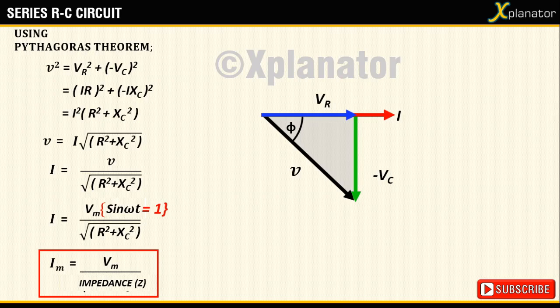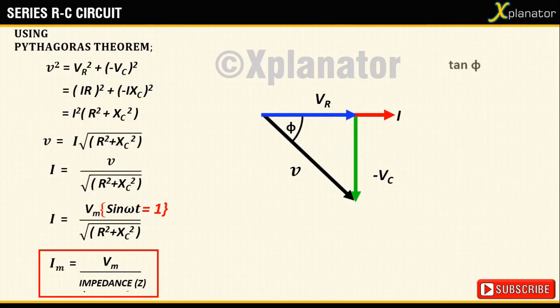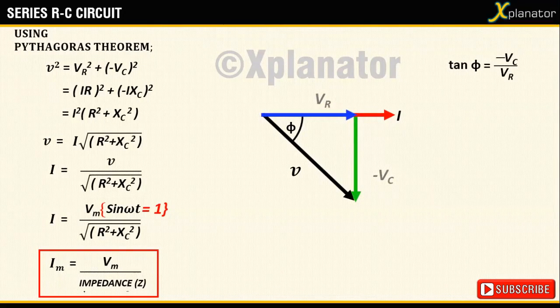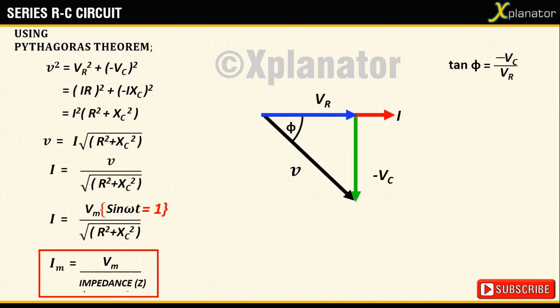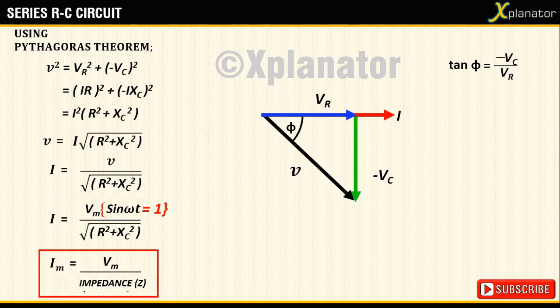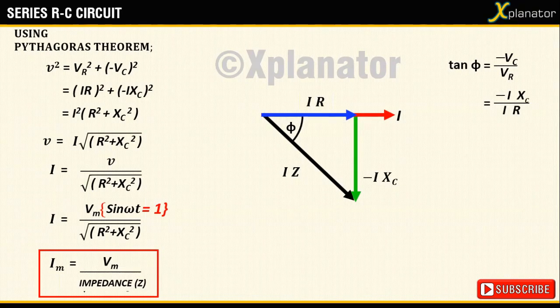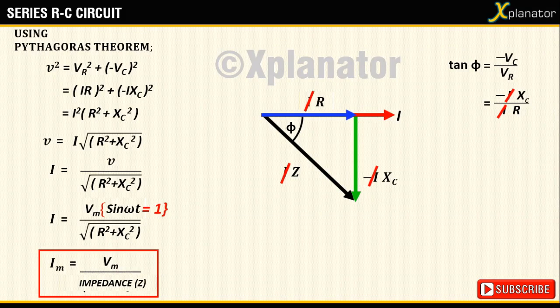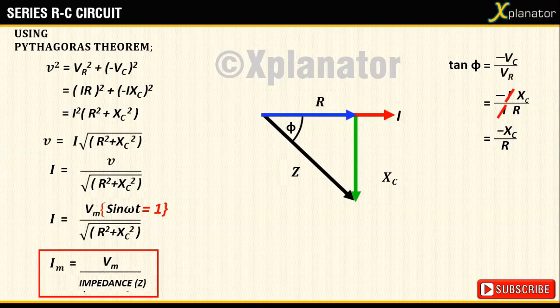Coming to computing the value of phase angle phi, if you consider the triangle again and write an expression for tan phi, it will be equal to -Vc by Vr. Substitute Vr as IR and Vc as IXc. Cancel the common term I and the relation will simplify to -Xc upon R.